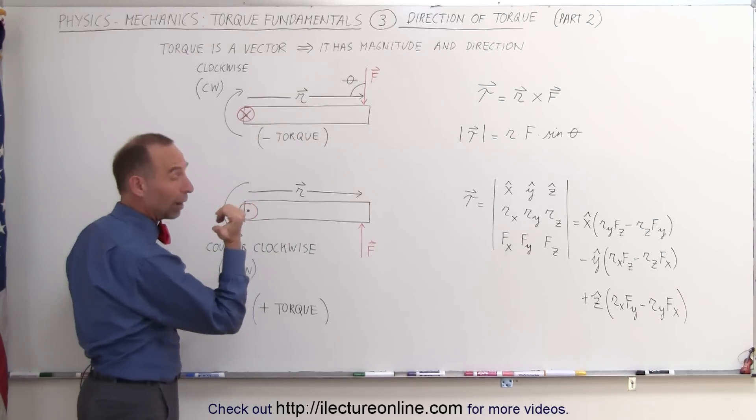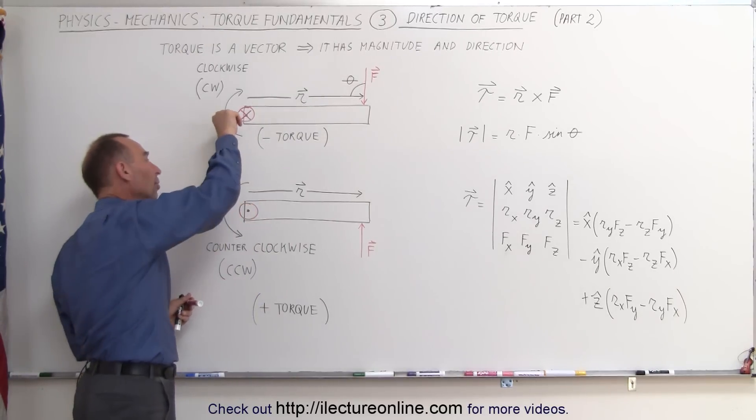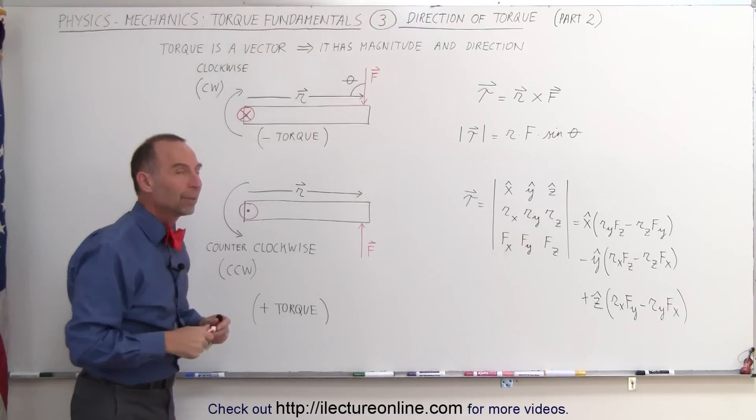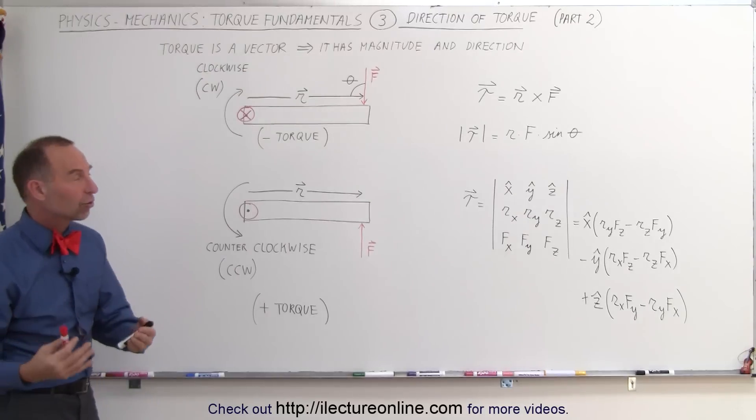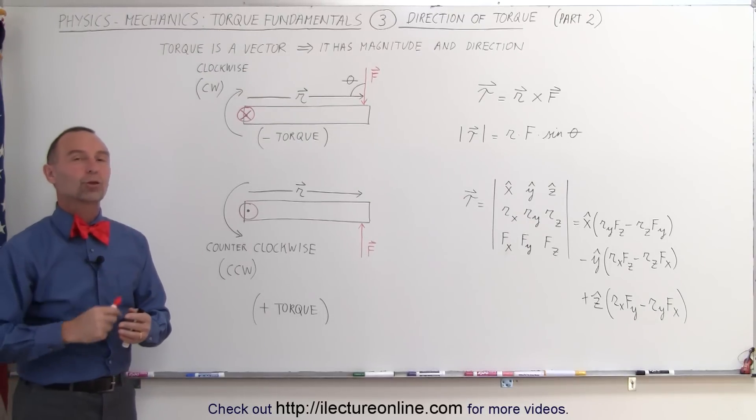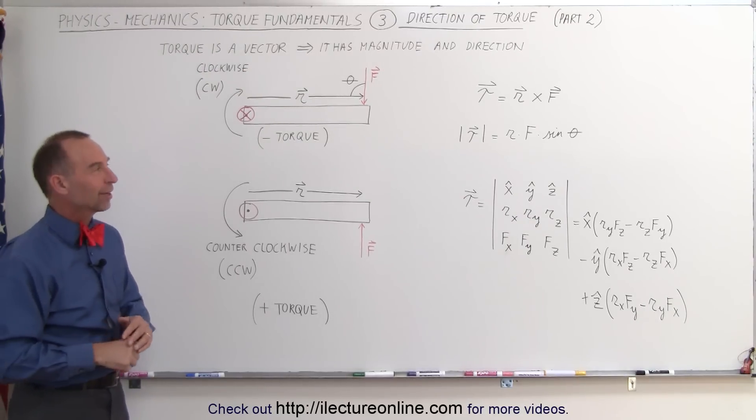Positive means out of the board or out of the paper. Negative means into the board or into the paper. And that's what we mean by the direction of a torque when we talk about in terms of vector quantities. That's how it's done.